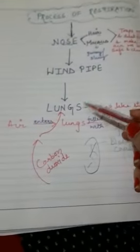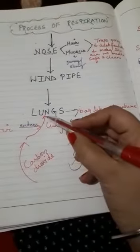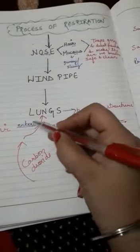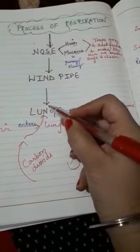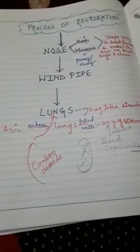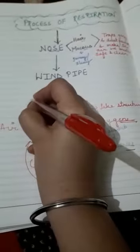When we breathe out, this carbon dioxide gets expelled out of our body. Again, this carbon dioxide enters into the lungs and is breathed out.